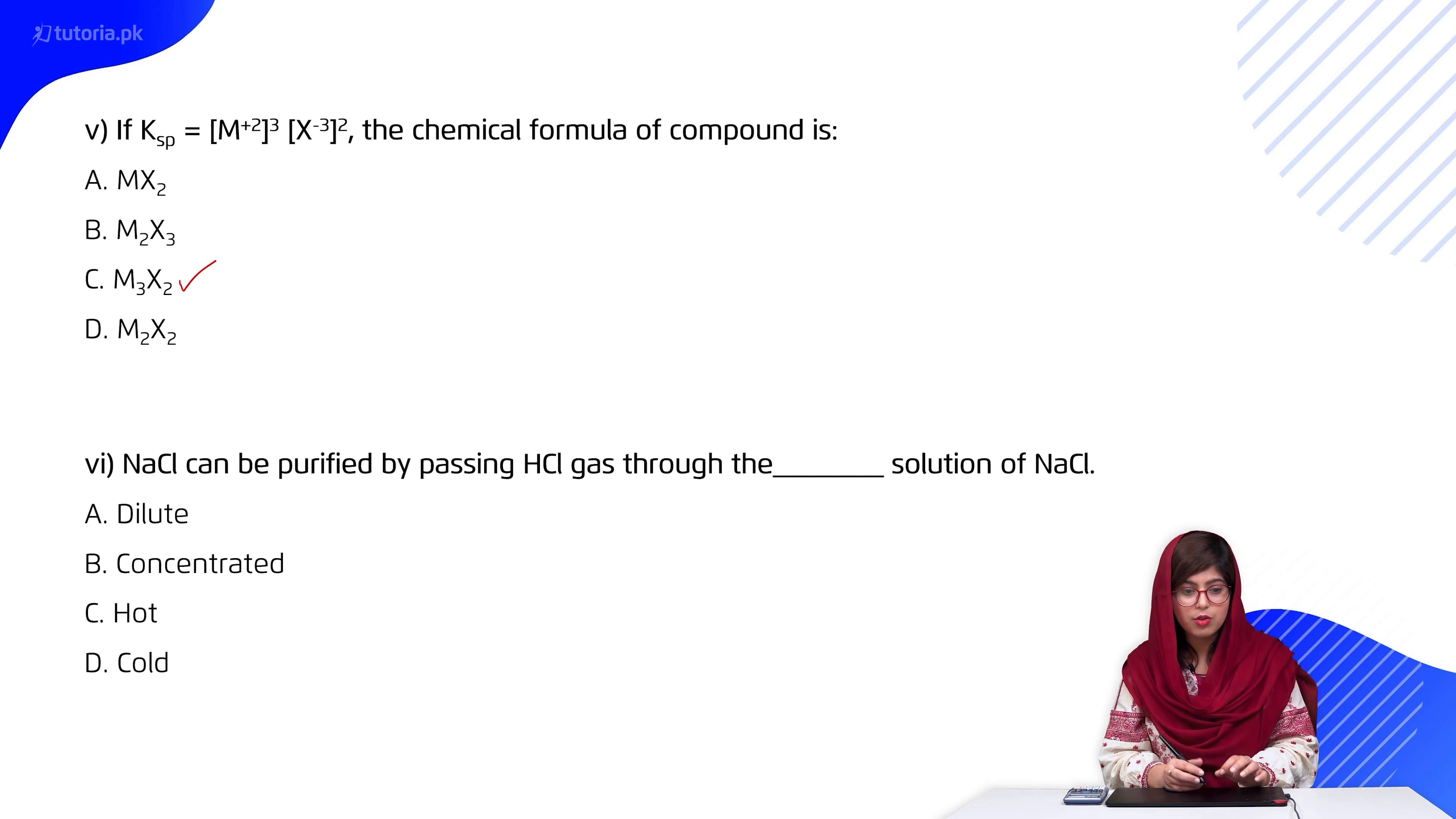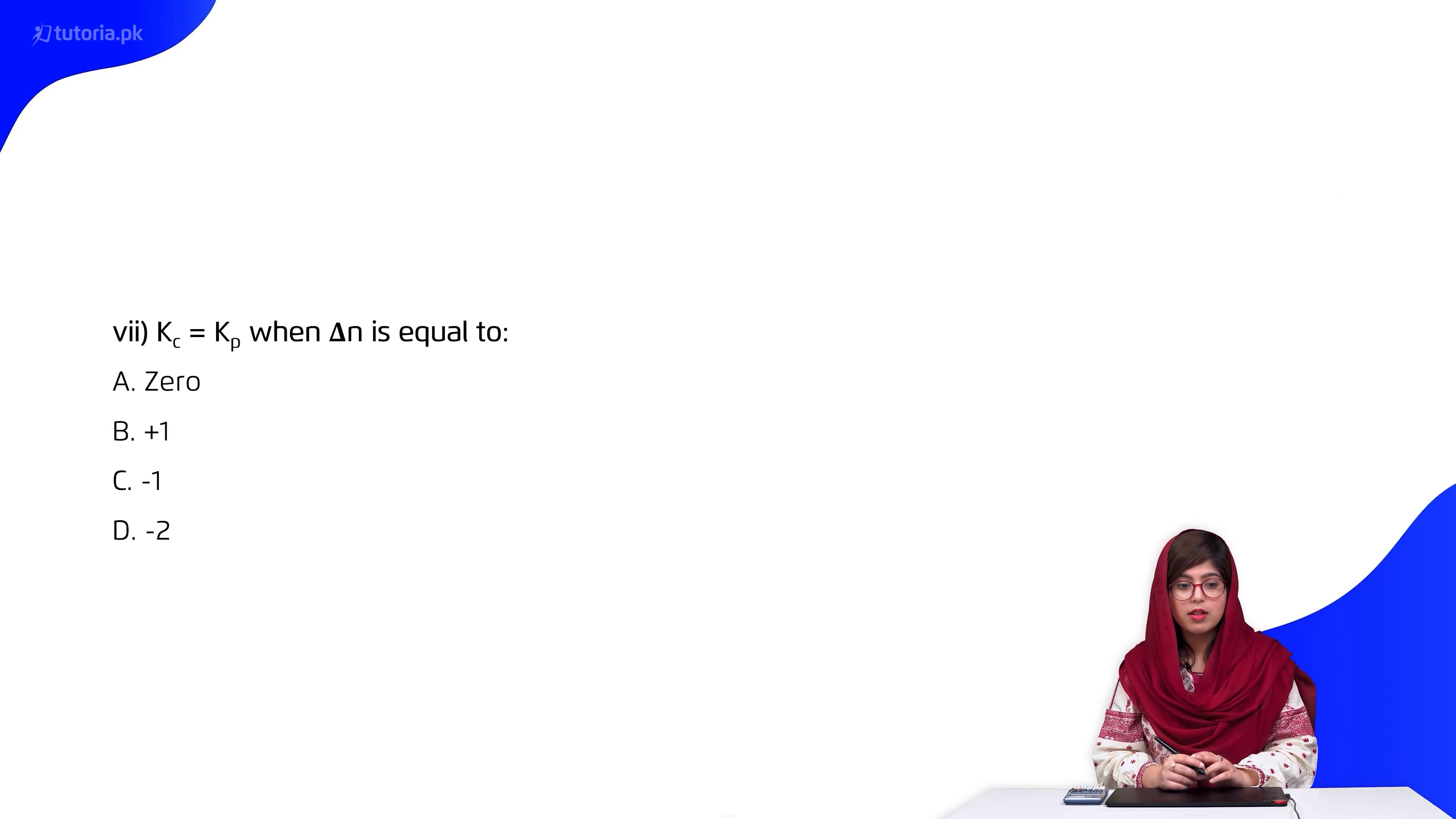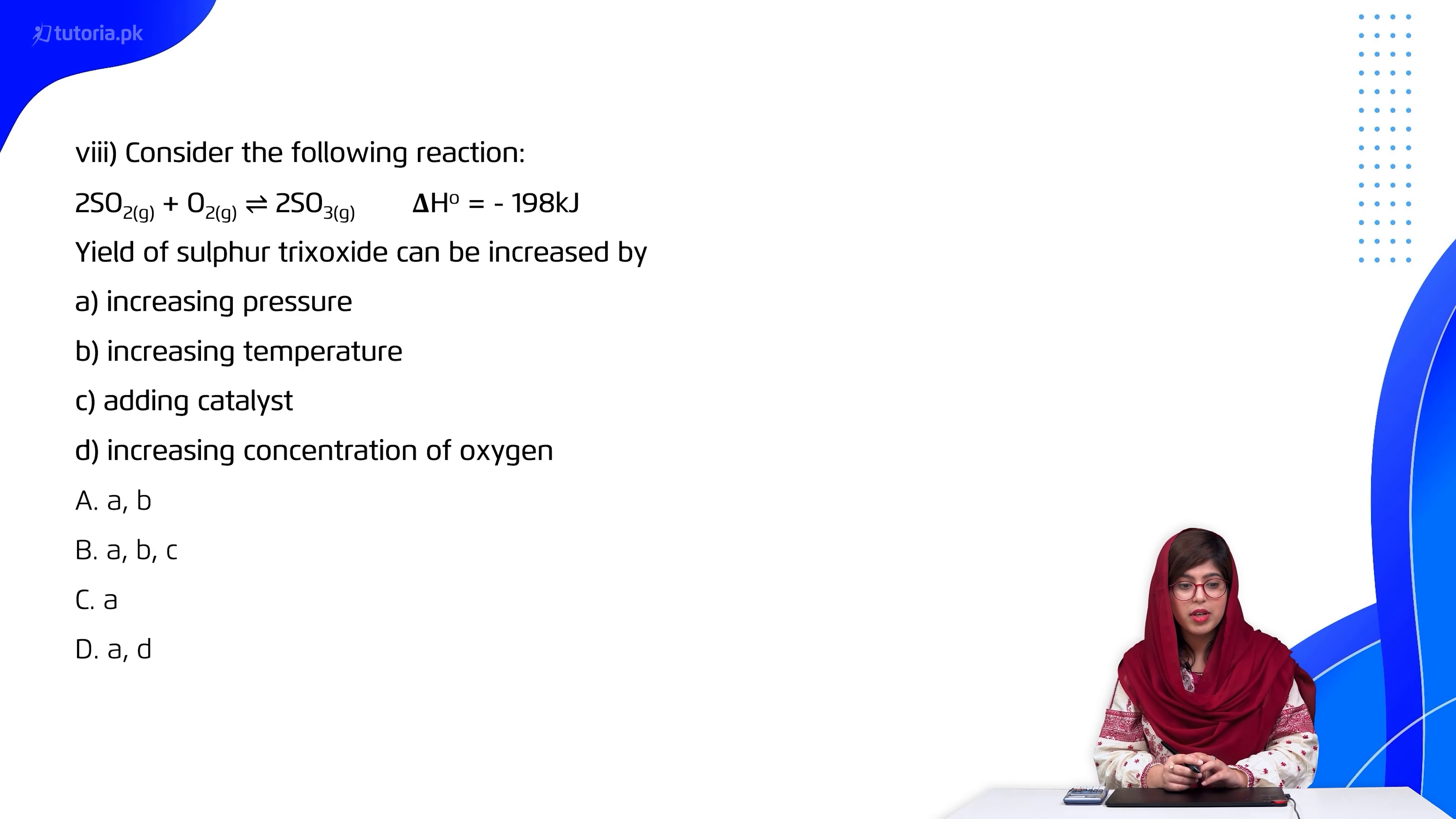Then students, moving forward, Kc equals Kp when delta n equals zero, obviously. Then students, MCQ number 8 says consider the following reaction: 2SO2 + O2 ⇌ 2SO3, ΔH° = -198kJ. Yield of sulfur trioxide can be increased by a) increasing pressure, b) increasing temperature, c) adding catalyst, d) increasing concentration of oxygen.